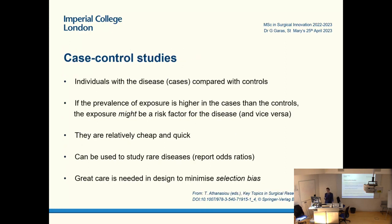In case control studies, you have cases who have the disease and controls who don't. What you do is compare the difference in exposure to whatever you're testing. If the prevalence of exposure is higher in the cases, you can make an assumption that there is an association between that exposure and the disease. Whether that's a causative relationship is a different story. The advantage is that they're relatively cheap and quick to do, and they're good for rare diseases.